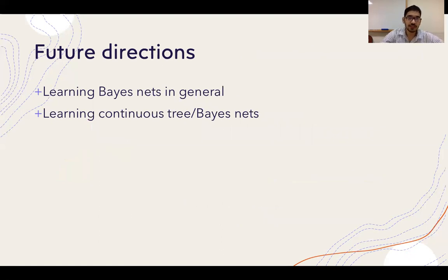To conclude, in this work we showed a near-optimal approximate structure recovery algorithm for tree-structured distributions. Two interesting future directions are: first, obtaining an approximate structure learning algorithm for general Bayesian networks, which is harder due to multiple parents per variable and higher-order interactions; and second, extending to continuous tree-structured distributions such as Gaussian Bayesian networks. Thank you for your attention.